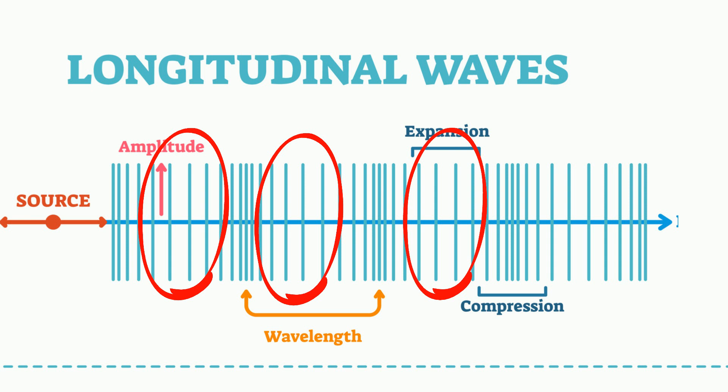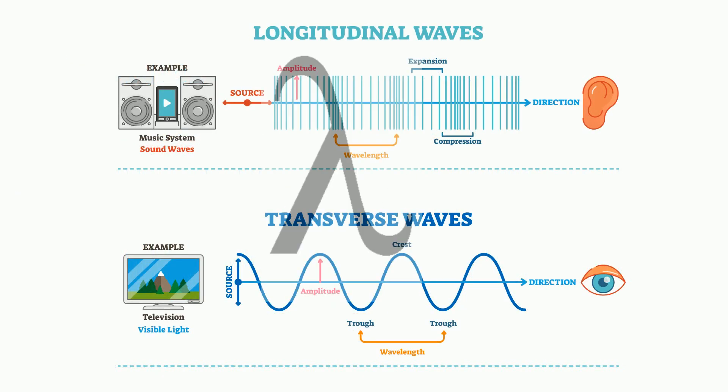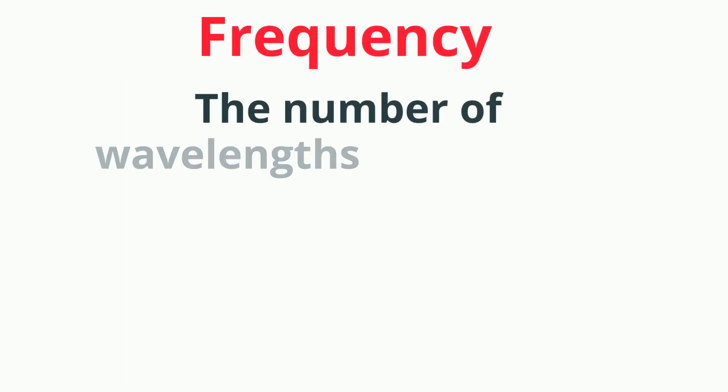The wavelength of a wave, which is represented by the symbol lambda, is the distance from crest to crest or trough to trough in transverse waves, and from compression to compression or rarefaction to rarefaction in longitudinal waves.